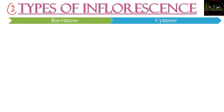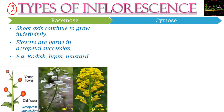There are two types of inflorescence: racimose inflorescence and cymose inflorescence. In racimose inflorescence, the shoot axis grows indefinitely — it continuously grows and does not terminate into a flower. Because of this, the flowers formed on this axis have acropetal succession. In acropetal succession, the young flowers are found towards the top.